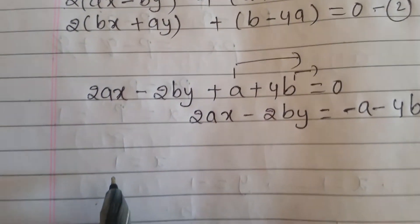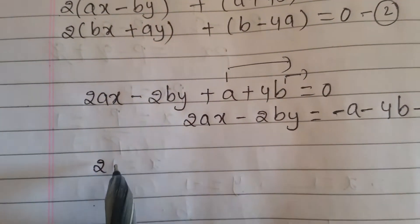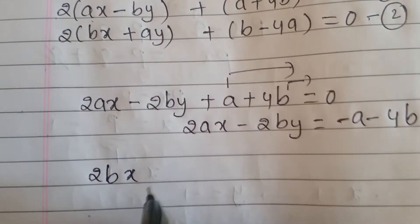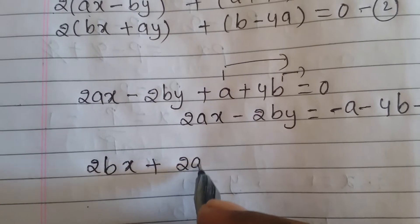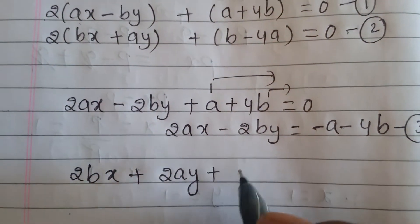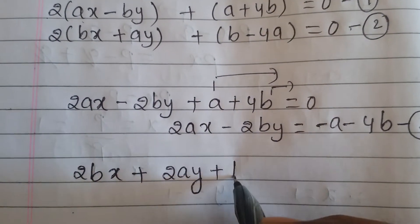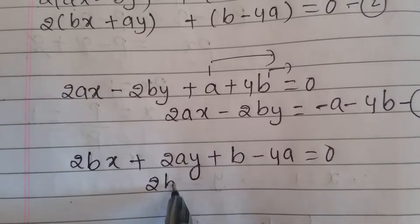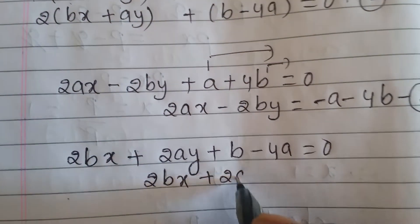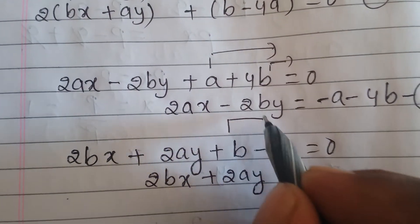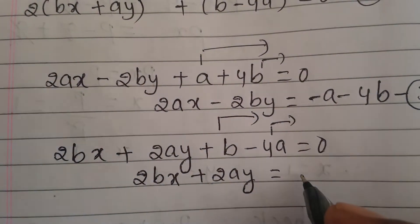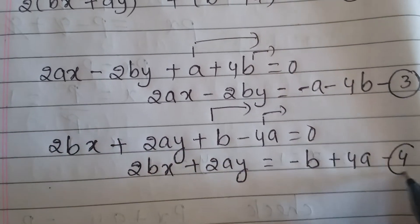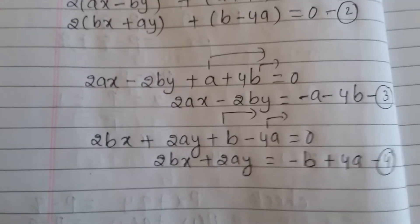Now take equation number two and similarly simplify: 2 into b gives 2bx, plus into plus gives plus, 2 into a gives 2ay. Remove the braces; b minus 4a equals 0. So 2bx plus 2ay — transposing b to the right side, plus becomes minus and minus becomes plus. Let this be equation number four.